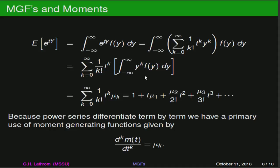What we end up with is really a power series expansion in the variable t, and the coefficients of that power series expansion are our individual moments of y to the k. This allows us to use calculus: because we can differentiate power series term by term, the consecutive derivatives of our moment-generating function give us our moments, which is going to be an incredibly powerful and useful way to get characterizations of our families of distributions.